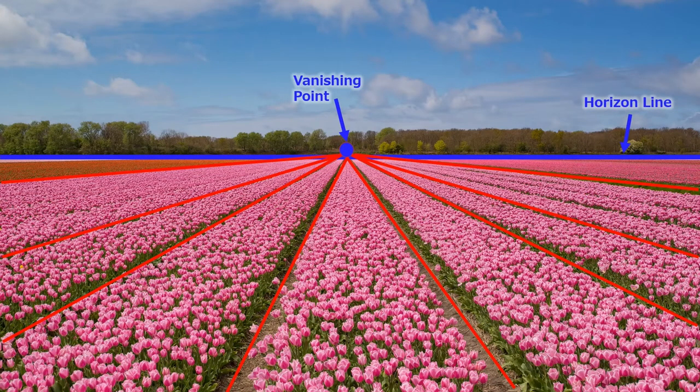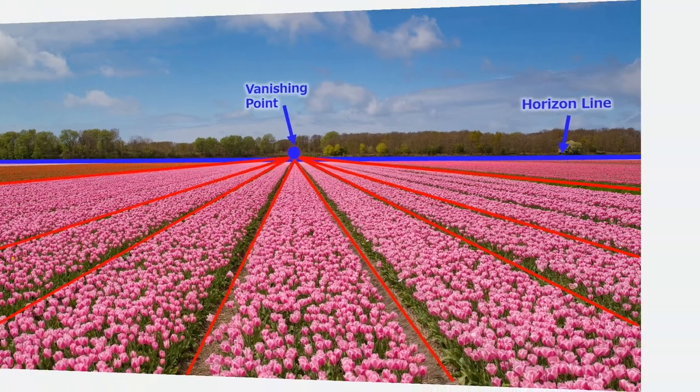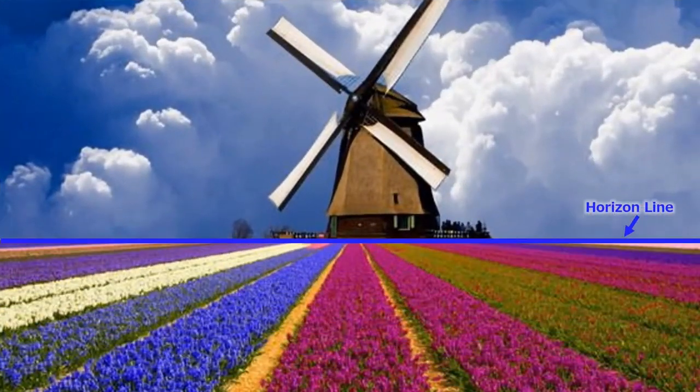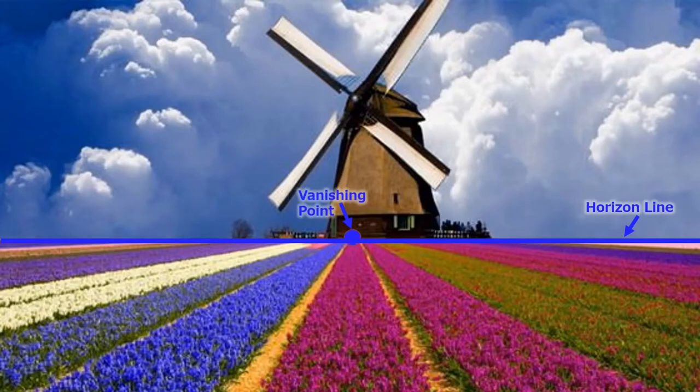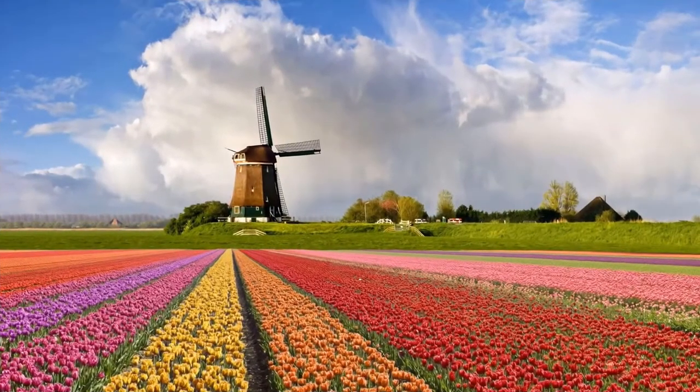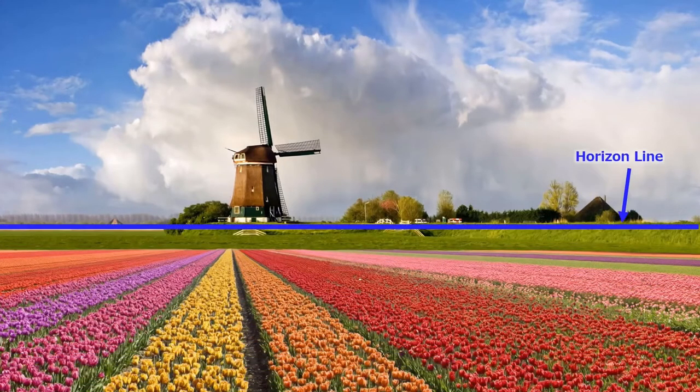And here is a picture of one of their famous windmills. The windmill is right on the vanishing point that's on the horizon line. Again, here is another with a windmill. And see how all of the lines come together at that one point. I think it's amazing and the colors are incredible.